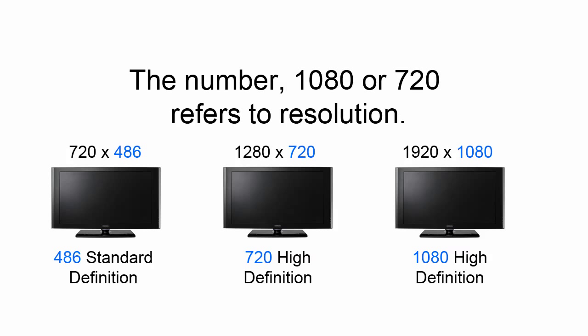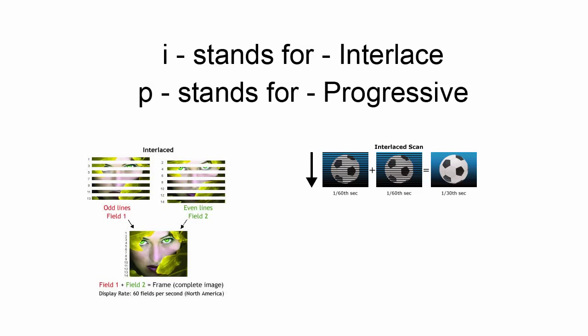So now that we have a sense of the two numbers, 720 and 1080, referring to the resolution of either the screen or the camera, the amount of detail, let's move on to the I and the P.